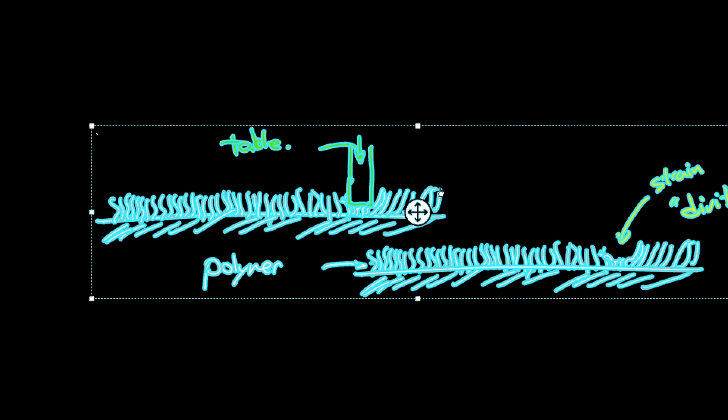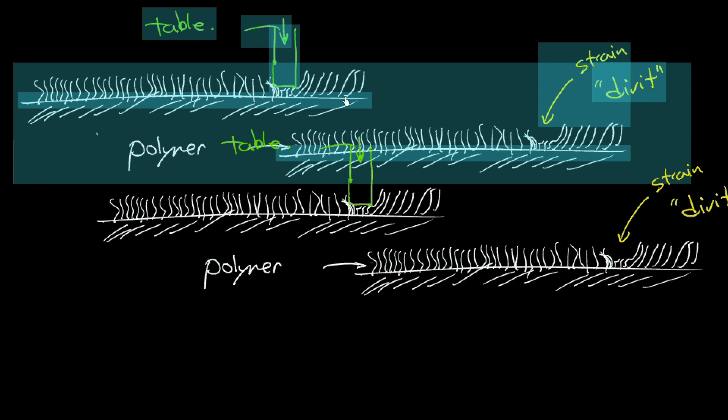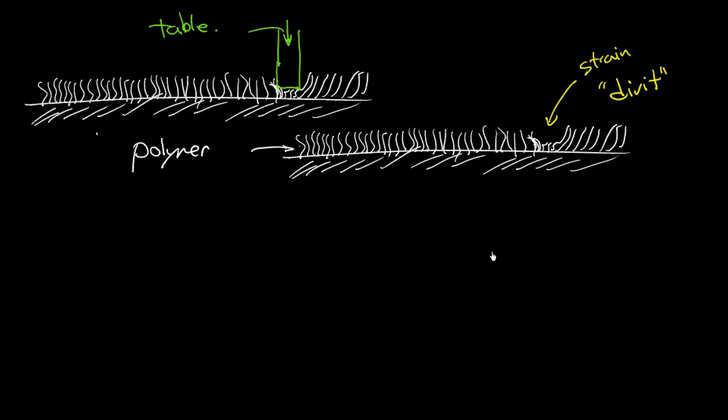In the previous video, we talked about viscoelasticity. Specifically, we looked at this case where you put a heavy table onto a carpeted floor. That's a carpet. So we've put a heavy table onto a carpeted floor, and then we remove it, and you see a little divot.